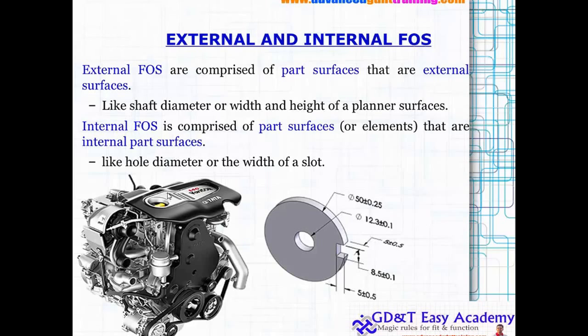But the internal feature of size is also a part surface or an element, but are internal, just like internal hole. This is the internal feature of size whereas this outer ring is an external feature of size, like the hole diameter or maybe the width of a slot. So these are the different conditions which you need to understand.